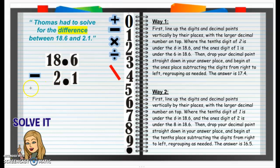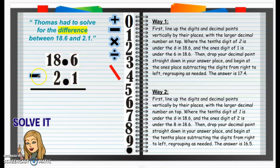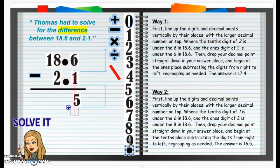So what we're going to do now is solve this. We are going to start over here on the right with the tenths place. 6 minus 1 is 5. I'm going to put that 5 down there. What do I do with that decimal? Drop it down — drop it like it's hot. That's your new song you guys have been telling me in class.